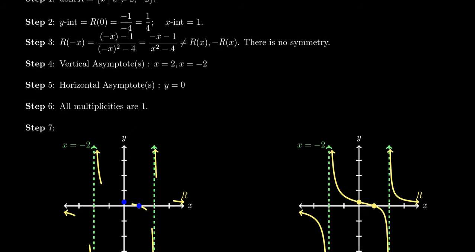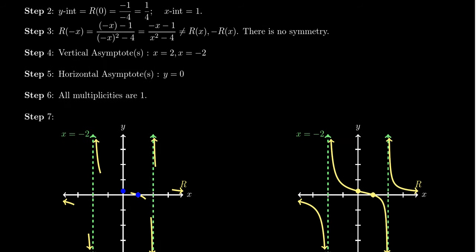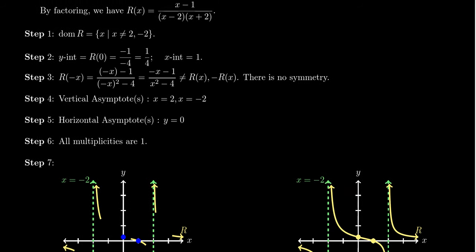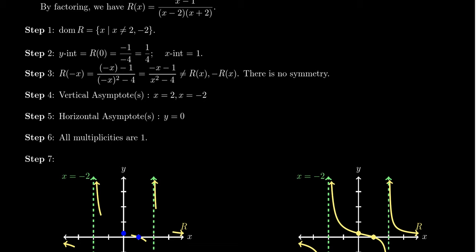So this is information we start plotting — the y-intercept at y = 1/4 and the x-intercept at x = 1. The next step is to test for symmetry. You take r(−x), replacing each x with a negative sign. In the numerator you get (−x − 1); in the denominator, (−x)² becomes positive x², so the denominator becomes x² − 4. The negative sign disappeared from the denominator but not from the numerator, so it's not even, and you can't factor a negative out of the whole thing either. There's no symmetry here.